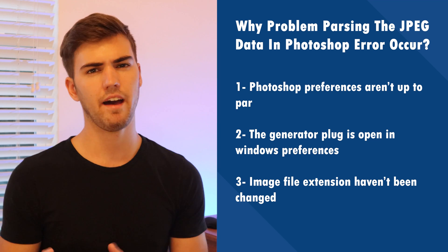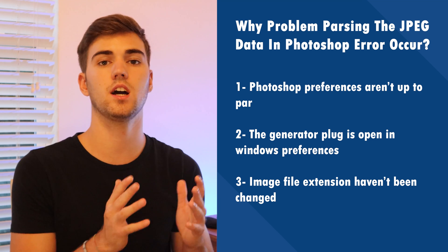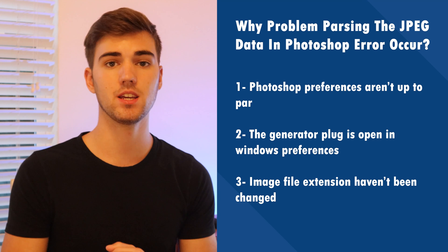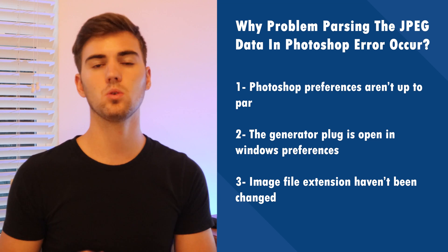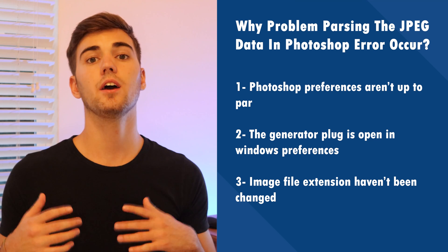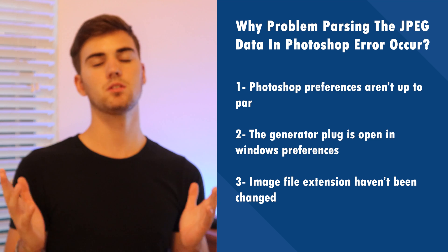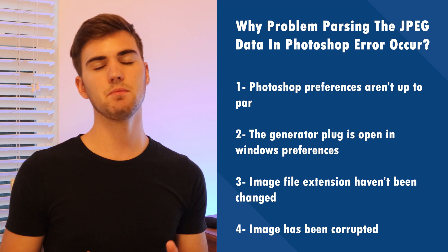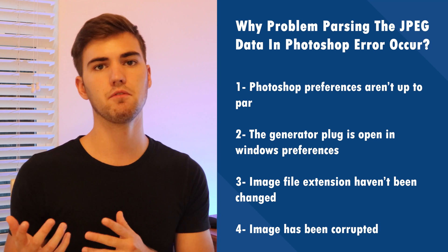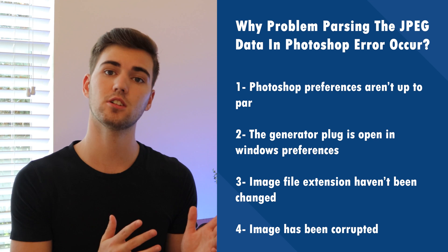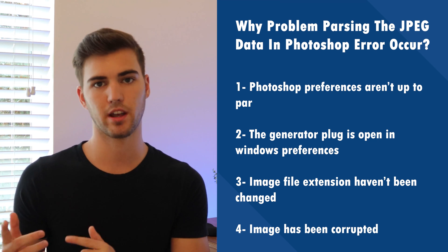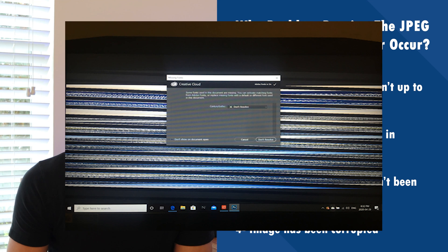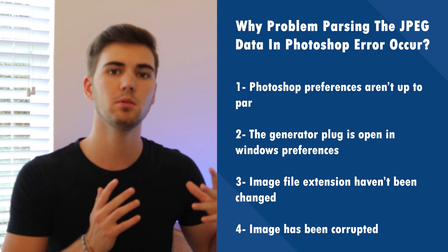Reason number three: the image file extension hasn't been changed. The extension of a file determines the quality of a photo. Photoshop features a user interface that is both efficient and innovative, allowing you to produce graphics that meet your needs. As we briefly noted earlier, saving a file with different extensions damages the photo's integrity and frequently renders the file illegible, resulting in the 'Photoshop could not complete your request' error. JPEG files are pretty delicate and can be readily damaged while being saved or downloaded from external sources. JPEG files' headers and footers are usually the focus of damage — they store the metadata corresponding to the file — which can lead to a corrupted image file and the parsing JPEG data error.